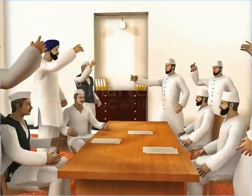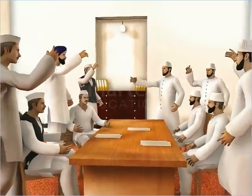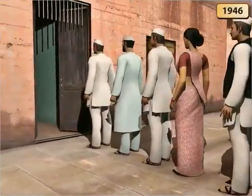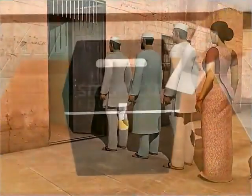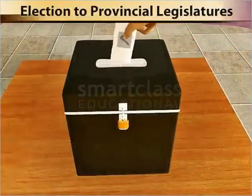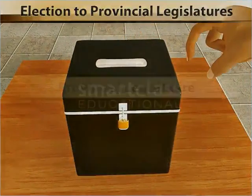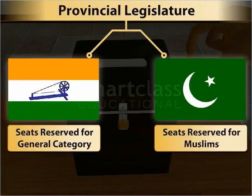The political polarization between the Congress and the Muslim League became more apparent in 1946 during the election to the provincial legislatures. The Congress won all the seats in the general category while the League won the seats reserved for Muslims with a huge majority.